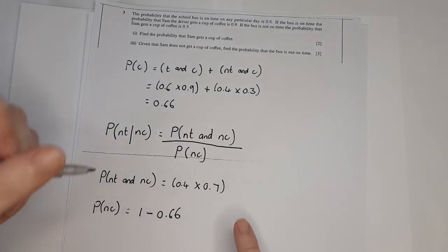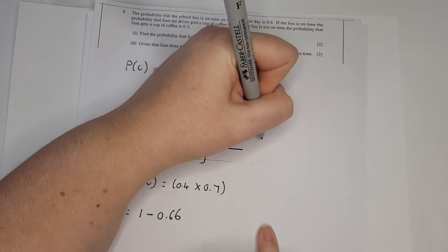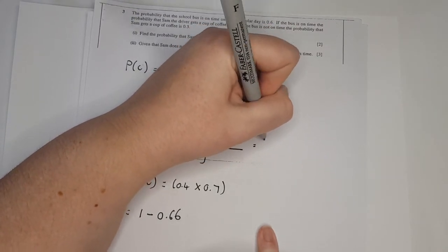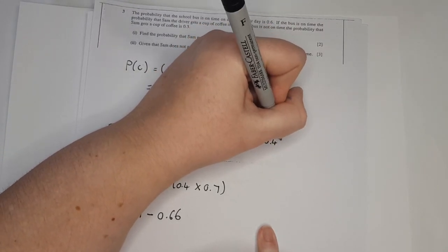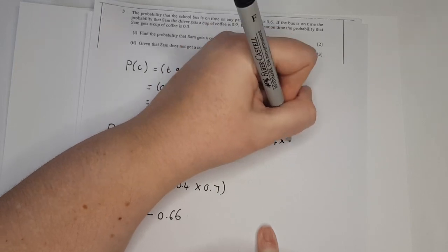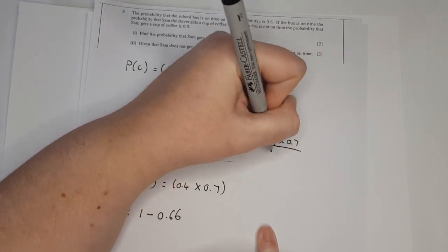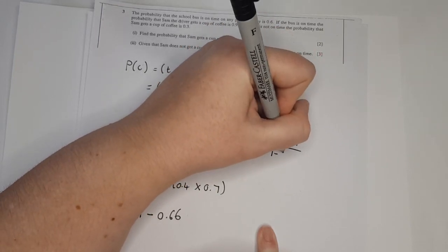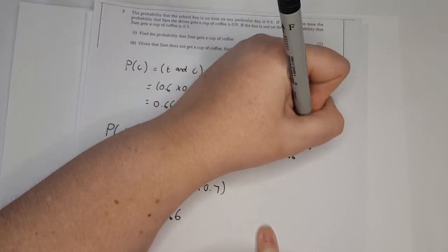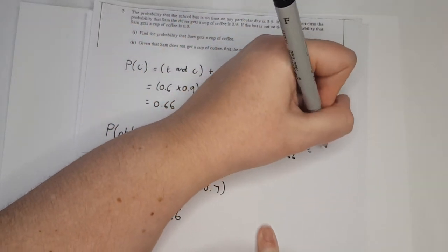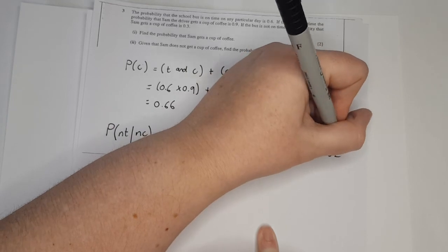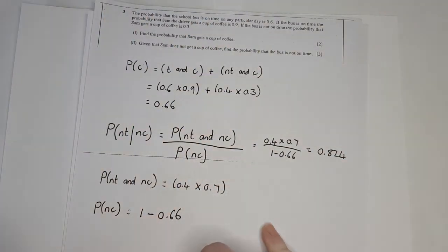So P(not on time | no coffee) = (0.4 × 0.7) / (1 − 0.66) = 0.28 / 0.34, giving a final answer of 0.824.